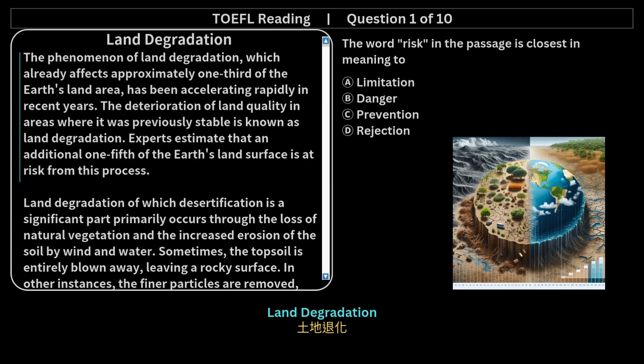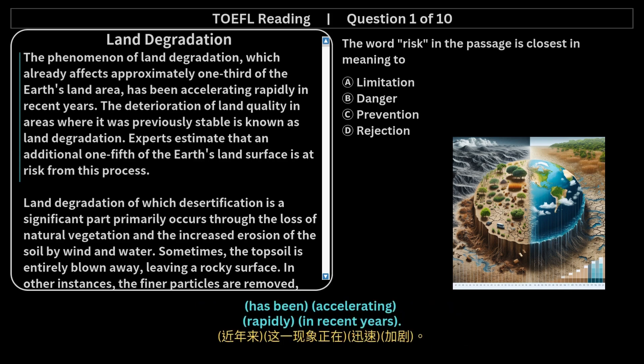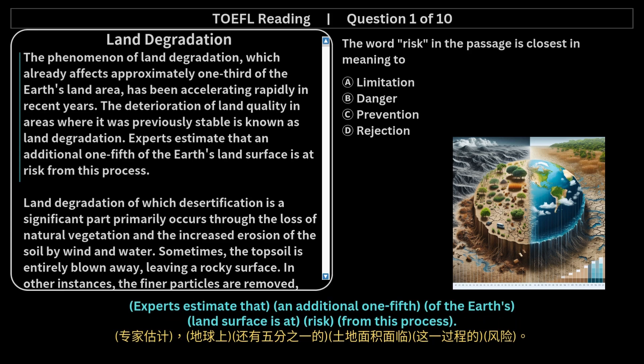Land Degradation. The phenomenon of land degradation, which already affects approximately one-third of the Earth's land area, has been accelerating rapidly in recent years. The deterioration of land quality in areas where it was previously stable is known as land degradation. Experts estimate that an additional one-fifth of the Earth's land surface is at risk from this process.